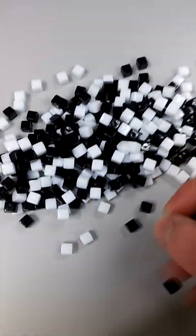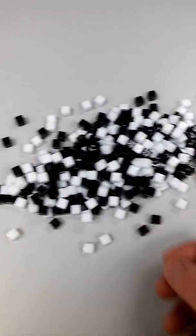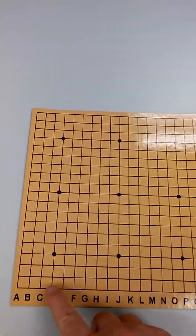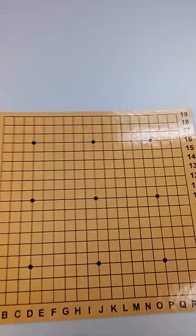And you get 181 of these white cubes and 180 of these black cubes. The board is 19 by 19 and you get these sites.